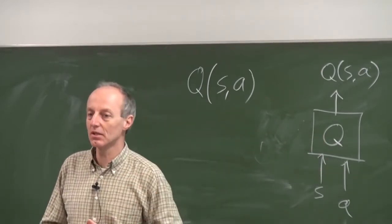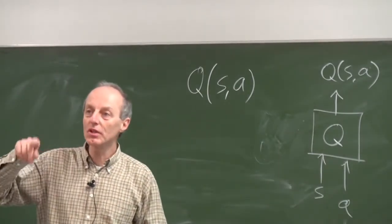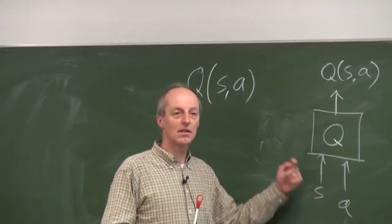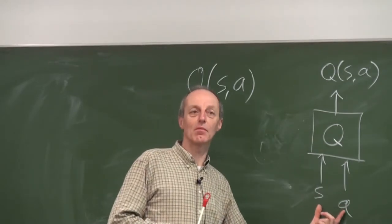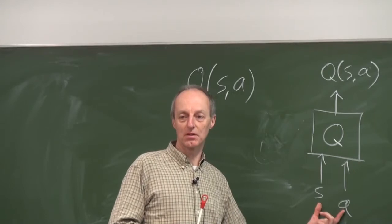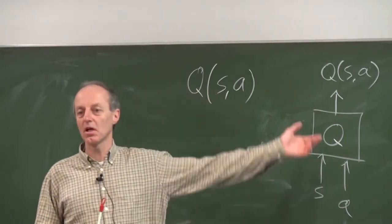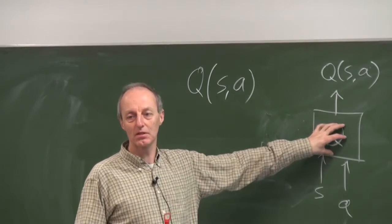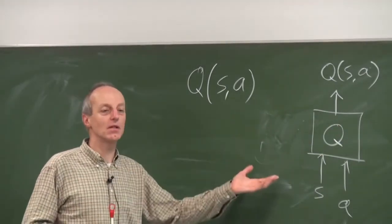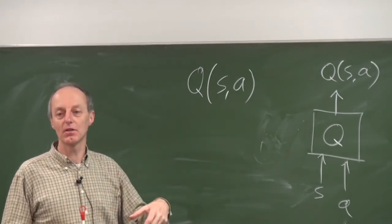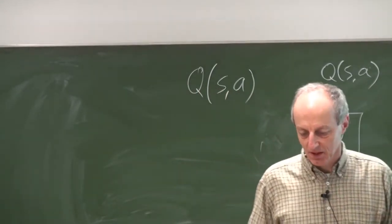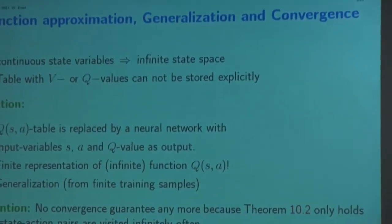You may use a neural network or other function approximation techniques. Once this neural network is trained, this black box contains the Q function. It will be trained during the learning process — we will repeatedly get Q values for some state-action pairs, and these are our training patterns. With maybe 10,000 training patterns, we will have approximated the Q function, and this approximated Q function will then be valid for infinitely many possible state-action pairs.